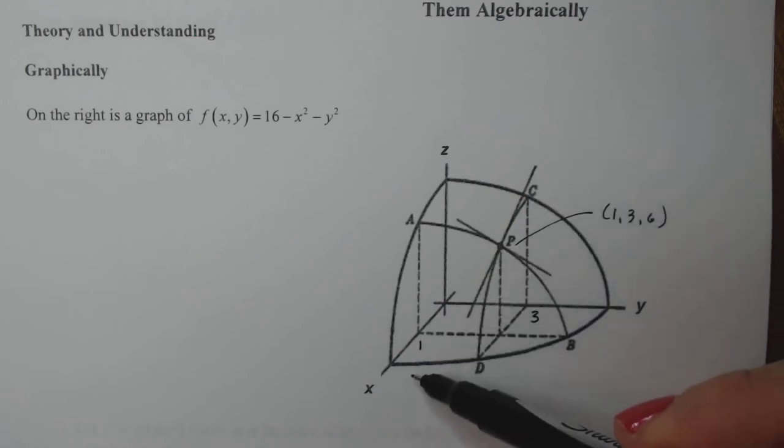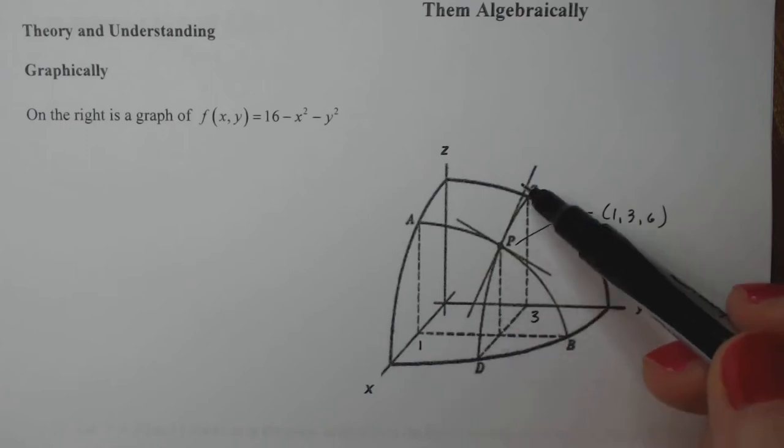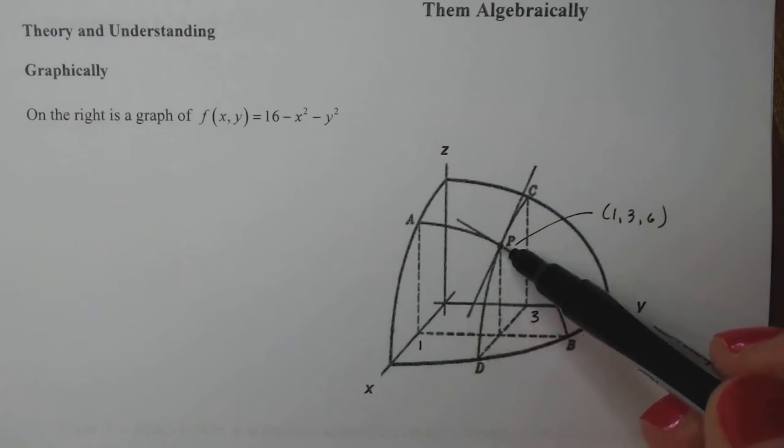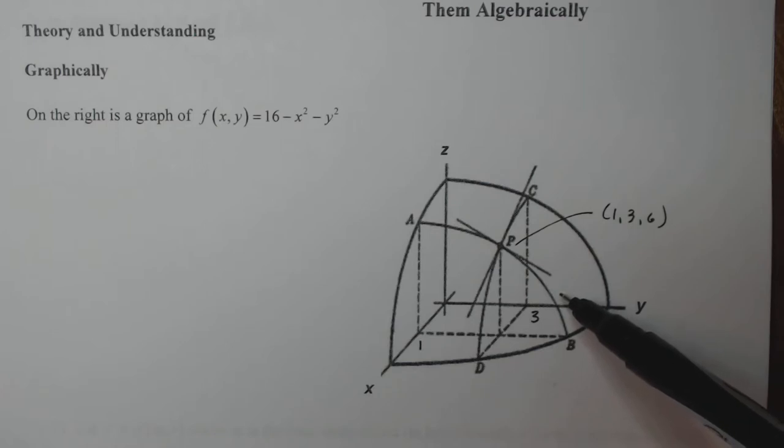If I'm standing at the point P and I face towards positive x, my tangent line will look like this. That's what we call a partial derivative in the direction of x. If I'm facing this direction towards positive y, the slope of that line will be the partial derivative of f with respect to y.